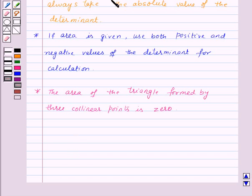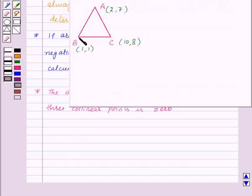Let's take an example. Here, we need to find the area of triangle ABC where the coordinates of A are (2, 7), coordinates of B are (1, 1), and coordinates of C are (10, 8).